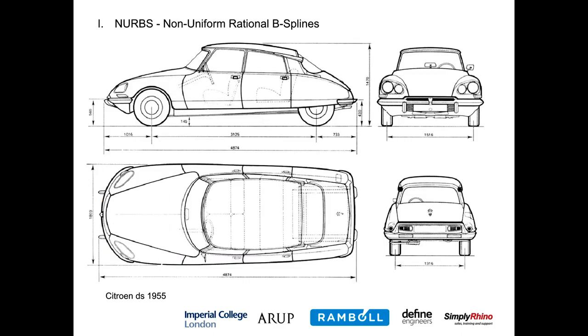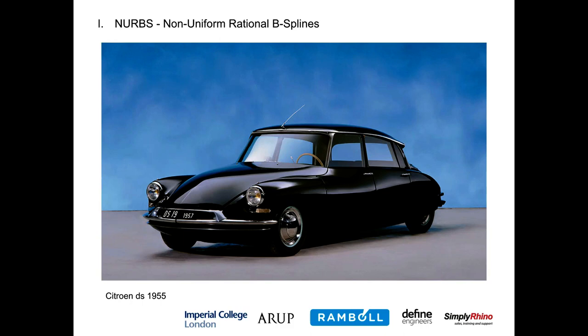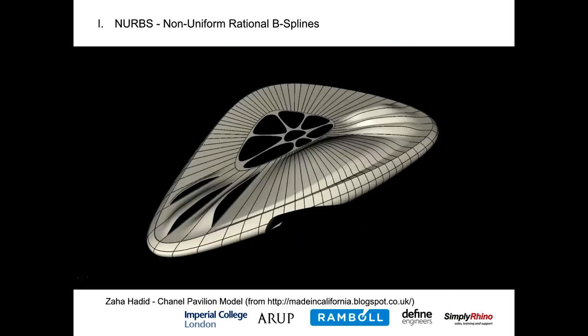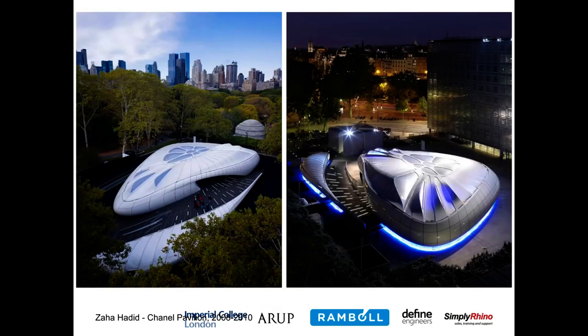The Citroën DS, developed by Citroën in 1955, used this sort of equation to model the car body. At first, the need for freeform surfaces was limited to industries like automotive, but from the 1980s and 1990s the need to use these geometries in architecture grew bigger and bigger, and tools like Grasshopper became more and more used by architects and engineers. One of the first examples where Rhino was used in architecture was the Chanel Pavilion by Zaha Hadid, which was then engineered by Arup. This project didn't use Grasshopper at the time — just Rhino — to describe those curves similarly to software used for ships or cars.